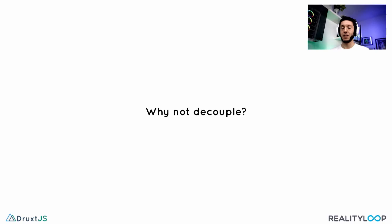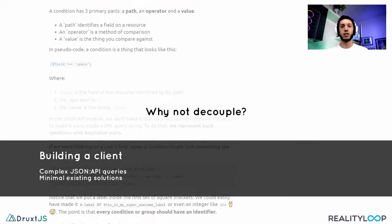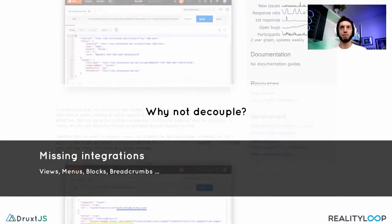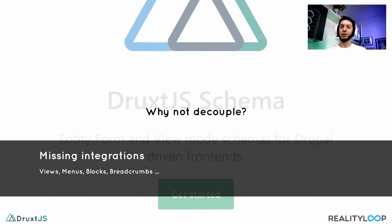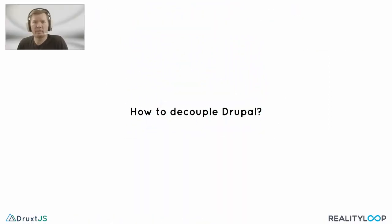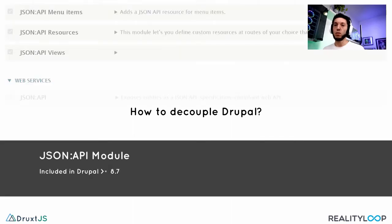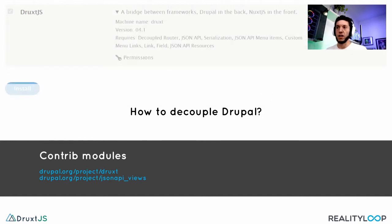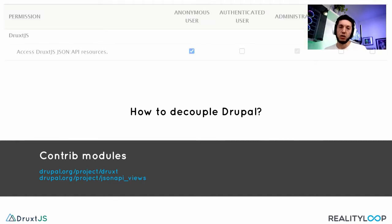So decoupling gives us more options and allows developers to work the way they prefer, making it easier to find developers. Why isn't everyone decoupling? There are valid reasons why not to do it. One of those is the complexity — when we first started decoupling our websites, there was a lot that had to be reinvented. That's also where Druxt.js comes in. How would we go about decoupling with Drupal? Both Drupal 8 and 9 come with the JSON API module, which does the majority of the work. We're also going to be using the JSON API Views module and the Druxt module, which simplifies some of the setup process. The Druxt module also provides a read-only permission that allows you to control who has access to all of the required JSON API resources.